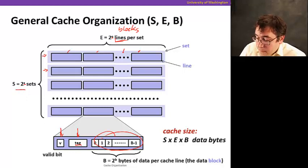There's 2^B bytes in a cache line. The reason we're using powers of two here is such that it'll be easy to figure out how many bits we're going to need for the address.